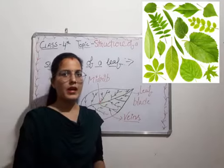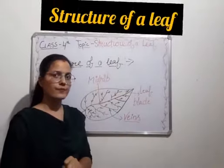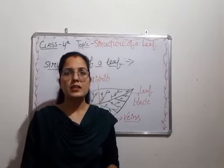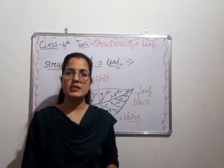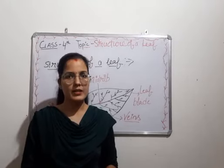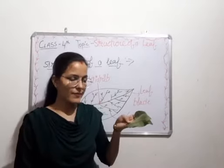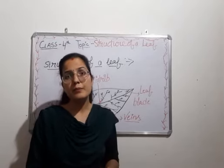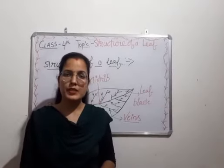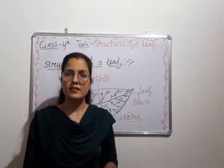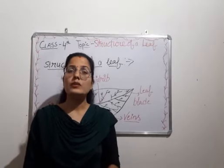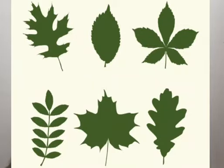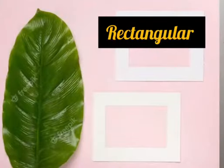A tree has many leaves. Leaves are attached to the branches of a stem and leaves also have a green color. The leaves look green because a green pigment chlorophyll is present in the leaves. Now the shapes of leaves — leaves are found in many shapes like circular, rectangular, egg shape,